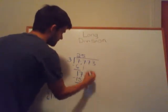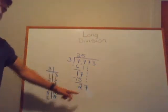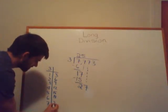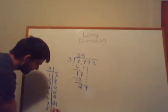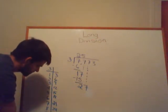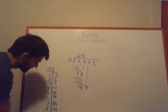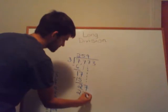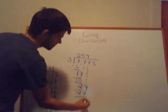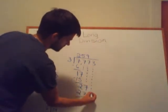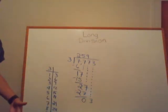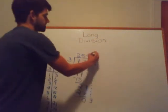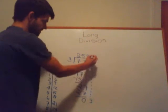Bring down the 7. 3 goes into 27. Continuing our multiplication table: 3×7=21, 3×8=24, 3×9=27. So 3 goes into 27 nine times evenly. 3×9=27. Bring down 3. Now we just have to figure out how many times 3 goes into 3, and from our table we see it goes in once. 3×1=3.